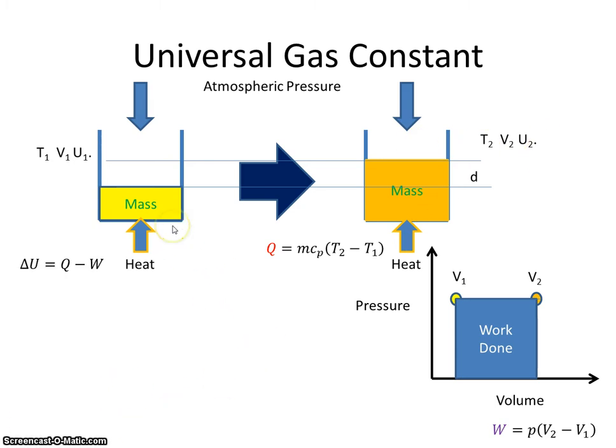From the first law of thermodynamics, the change in internal energy is the heat provided minus the work done. So the change in internal energy is U2 minus U1. The heat is from this equation here, and the work is from this equation down here.